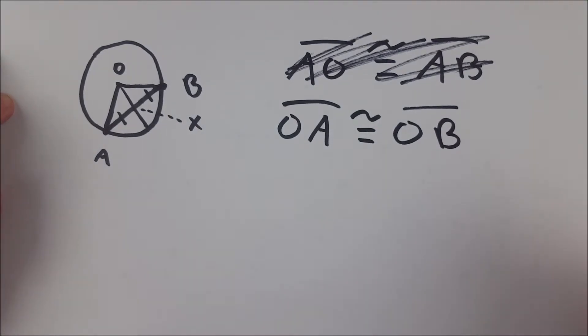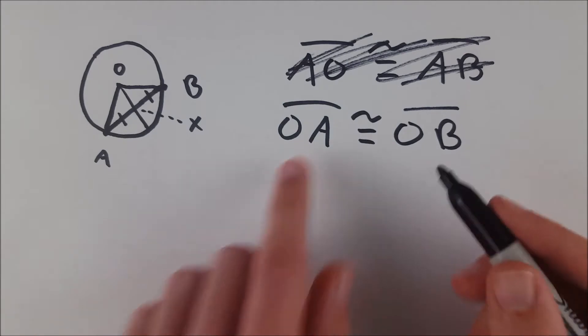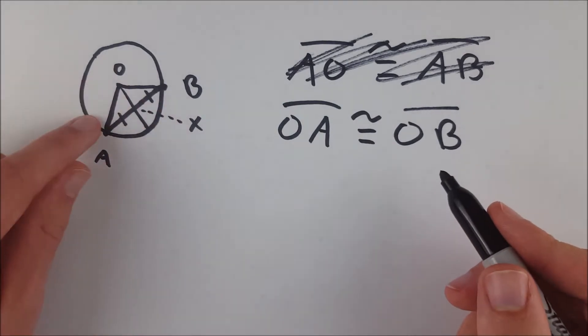And of course, all radii of one circle are congruent. It goes from the center to a point on the circle. So both of these sides are radii. So we get this OA is congruent to OB.